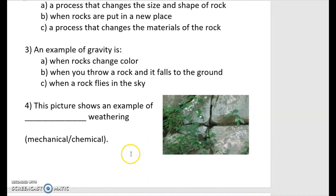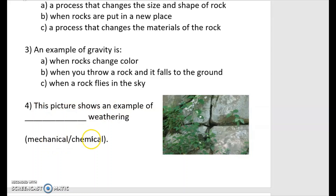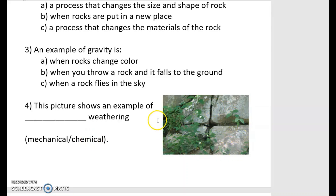Now we're going to look at a picture and you're going to tell me if it's mechanical or chemical weathering. This picture shows an example of blank weathering — is it mechanical or chemical? Look at this picture — what is going on here? There are plants.